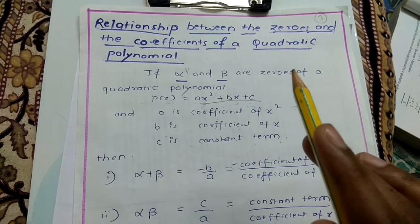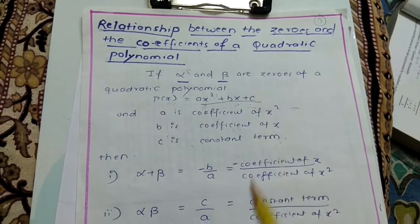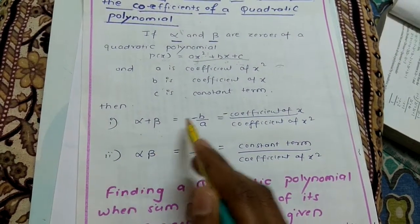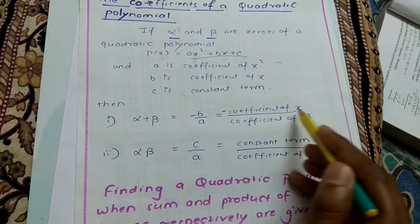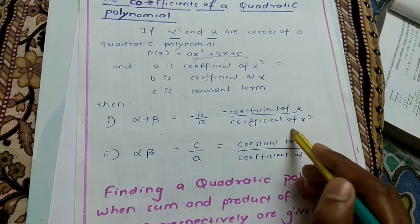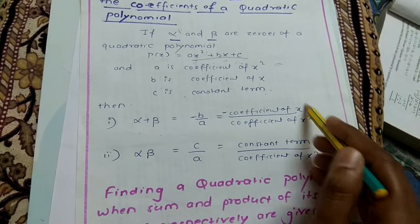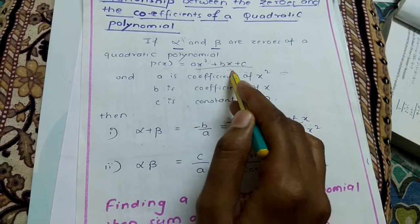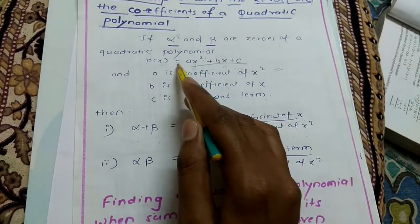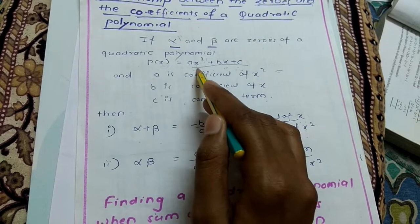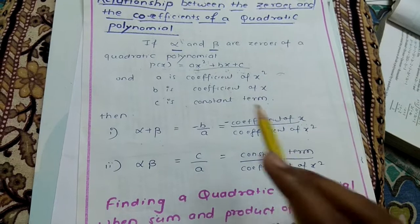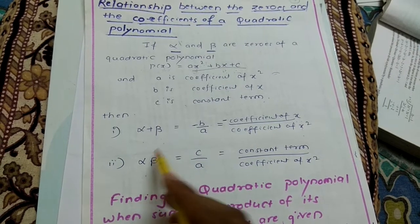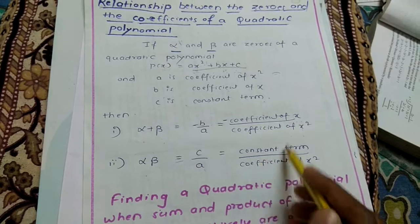Now, what is the relationship between the zeros alpha and beta and the coefficients of the quadratic polynomial? Alpha plus beta, that is the sum of zeros, equals minus b upon a, where b is the coefficient of x and a is the coefficient of x squared. If the variable is taken as y or z or m, b will be the coefficient of that variable accordingly. Next, alpha into beta, that is the product of zeros, equals c by a, where c is the constant term.